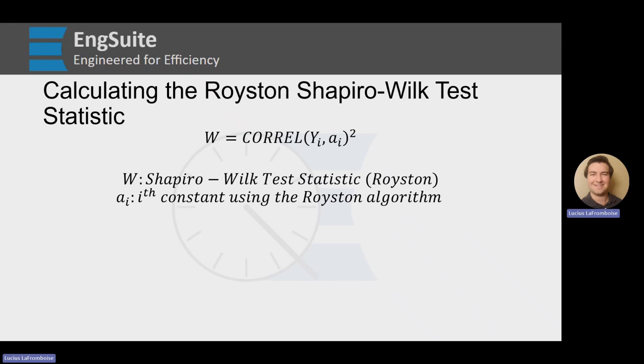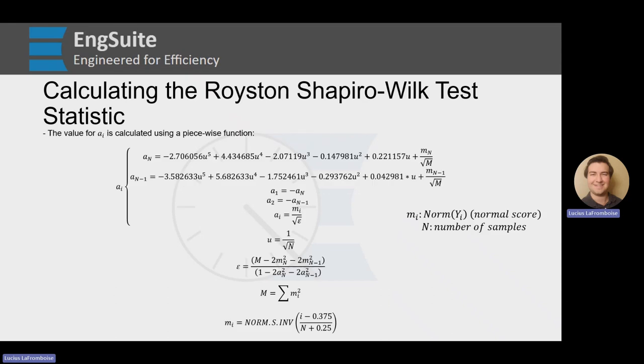So that W test statistic is pretty easy to calculate once we get all of our A values. To calculate the A values, we're going to have to use this piecewise function. And to start,